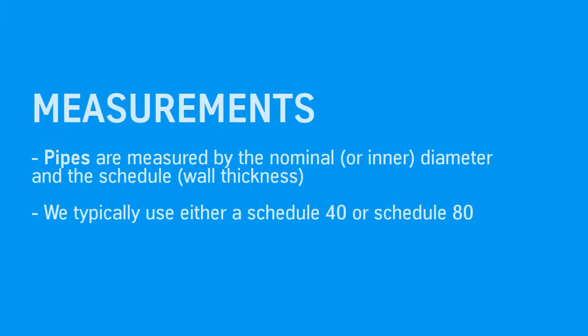When a pipe is measured, the measurements are given in a nominal or inner diameter. Pipes are also referred to by a schedule, which is a wall thickness. Typically we use a schedule 40 or a schedule 80.